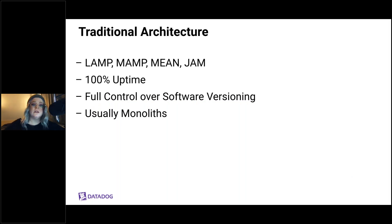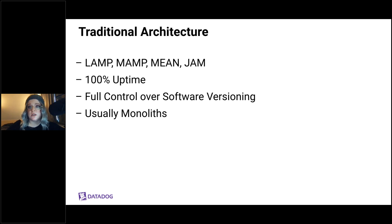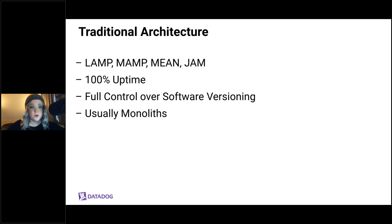To understand serverless, we need to understand traditional application architecture. Traditional web applications have what we refer to as stacks — typically consisting of an operating system, a server, a database, and a programming language. LAMP is Linux, Apache, MySQL, and PHP. MAMP is Mac OS, Apache, MySQL, and PHP. MEAN is MongoDB, Express, Angular, and Node. The JAMstack is JavaScript APIs and markup — a fairly new name for a simpler approach.